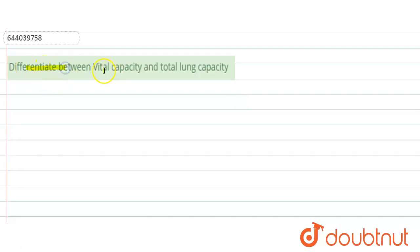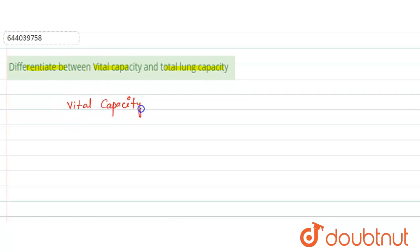The question is: differentiate between vital capacity and total lung capacity. We will make two columns — in the first column we will write vital capacity, and in the other column we will write total lung capacity.